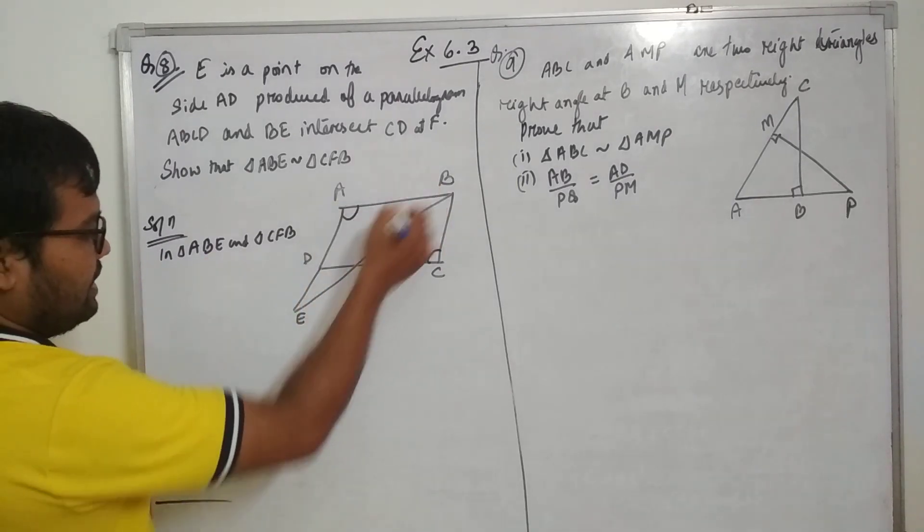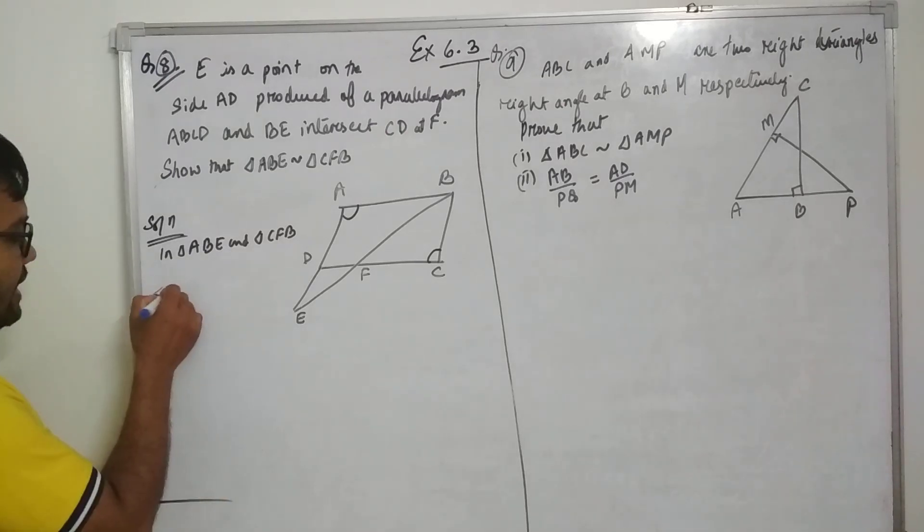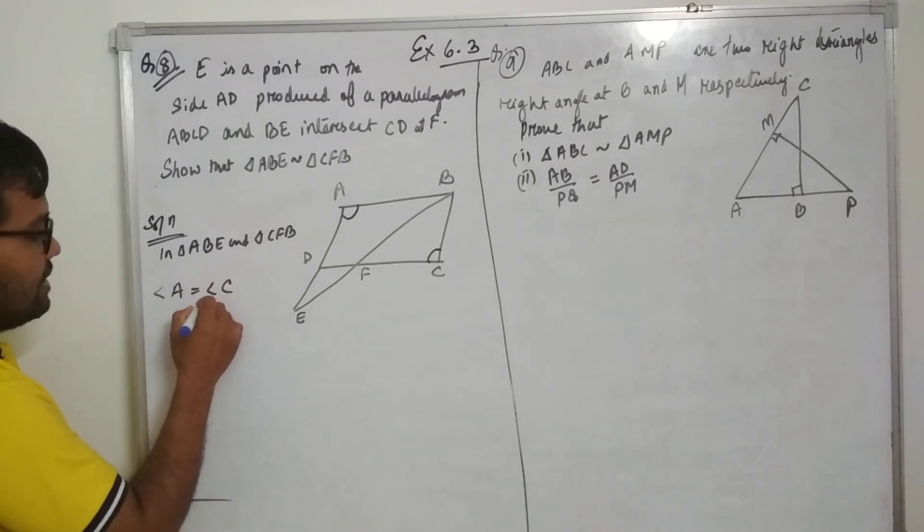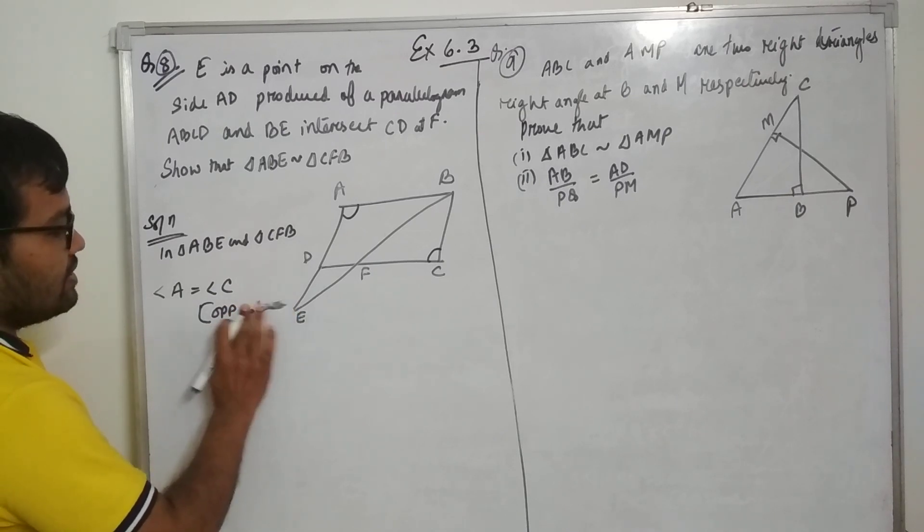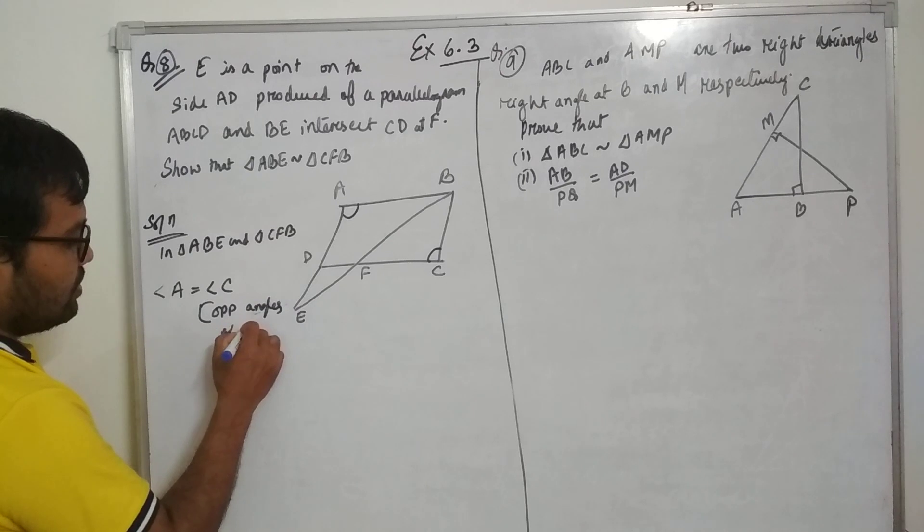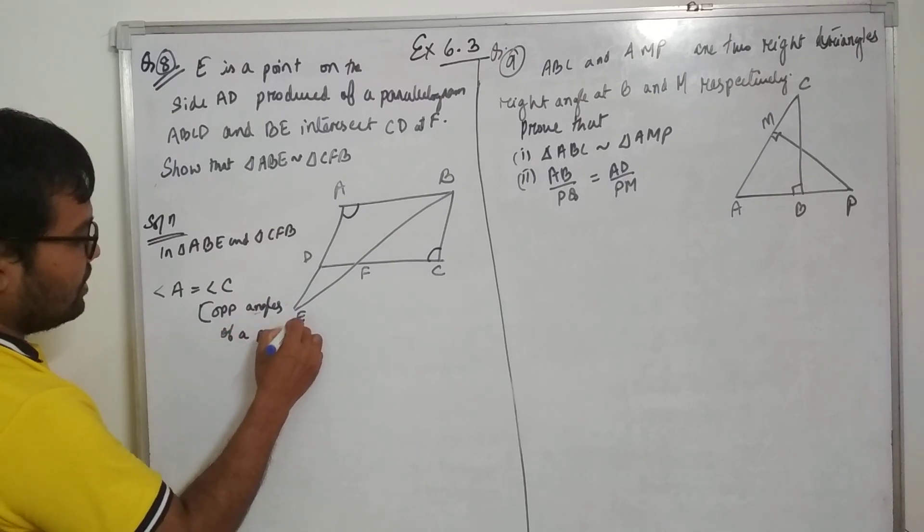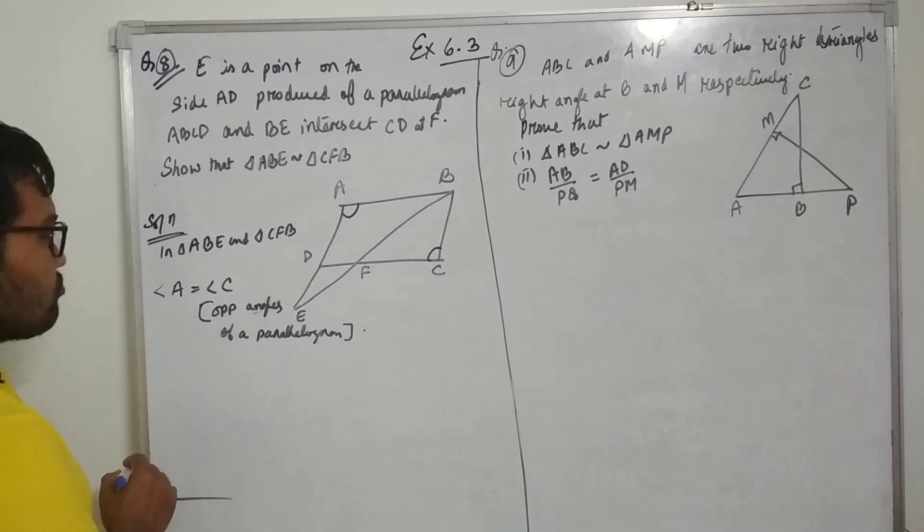Now in triangle ABE, opposite sides of a parallelogram are equal. Angle A equal to angle C. Opposite angles of a parallelogram. This we already know, opposite angles of a parallelogram.